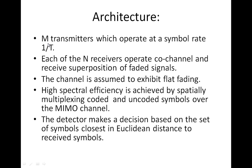The architecture has M transmitters, each operating at a symbol rate of 1/T. Each of the receivers operates co-channel and receives a superposition of faded signals. We assume the channel has flat fading. Because of spatial multiplexing of coded and uncoded symbols over the MIMO channel, you can achieve high spectral efficiency using VBLAST. The detector makes its decision based on the set of symbols or the estimate of symbols closest in Euclidean distance to the received symbols.